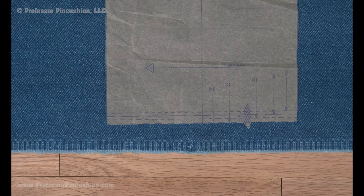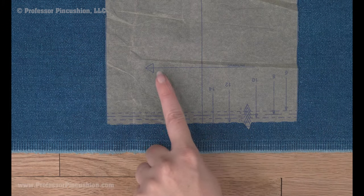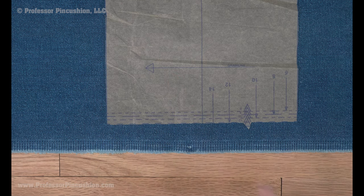Also, make sure you're following the grainline rule by having the grainline arrow be parallel with the salvage. Otherwise, your garment may accidentally twist around the body when finished.